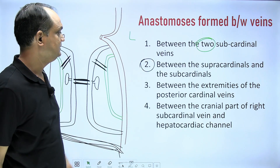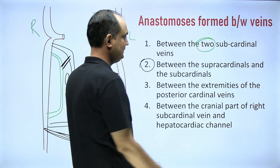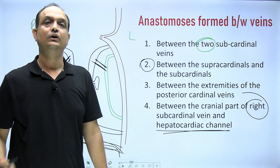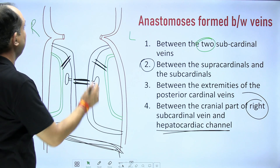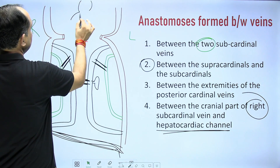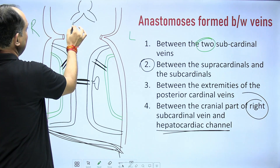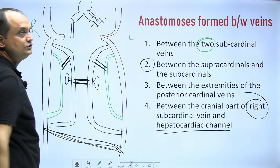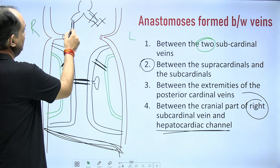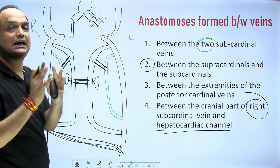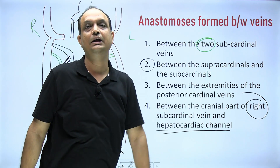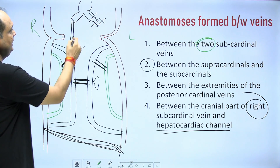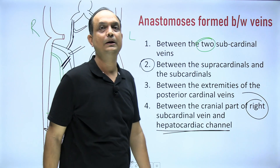The fourth anastomosis develops between the right sub cardinal vein and the right hepatocardiac channel. The hepatocardiac channel is the dilated right vitelline vein — as the left horn of sinus venosus regresses, blood shifts from left to right, and the enlarged right vitelline vein is labeled the hepatocardiac channel. So there is an anastomosis between the right sub cardinal vein and the right-sided vitelline vein or hepatocardiac channel.